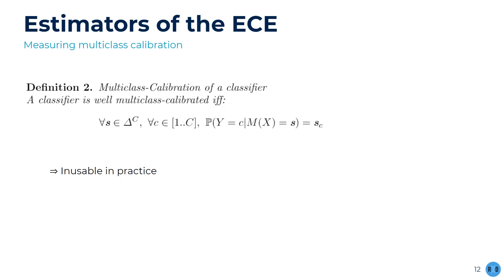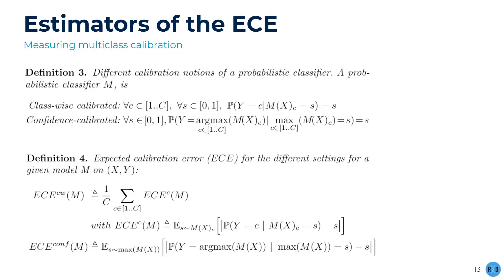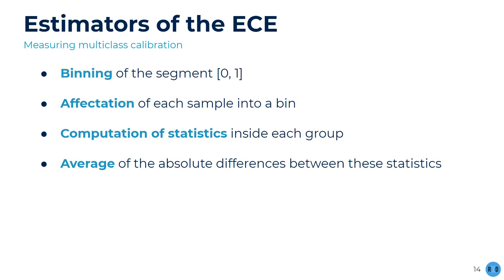To still be able to quantify calibration in the multi-class setting, one has to look at either confidence calibration — which, instead of grouping points with respect to the score for a fixed positive class, does so with respect to the score associated to the predicted class, and computes the ratio of correctly classified samples in each group — or class-wise calibration, which quantifies the calibration with respect to each class one after the other as if they were successively considered as positive, and averages the obtained ECEs of each class. For each method, the legacy estimation relies on uniform binning of [0,1], affectation of each sample into a bin with respect to its score, and averaging the absolute differences between the compiled ratio and mean within each group. In the case of class-wise calibration, this is done c times, once for each class, and all results are averaged.